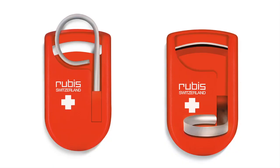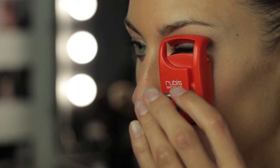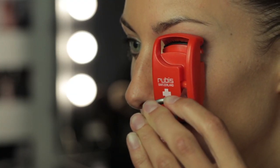Pocket eyelash curler, simple to use. Unfasten the steel handle, place your eyelashes carefully on the silicon pad, then close the eyelash curler by pressing the steel handle down.